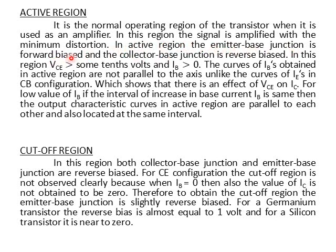In the Active Region, VCE is greater than some tenths of a volt, and IB is greater than 0. The curves of IB obtained in the active region are not parallel to the axis, unlike the curves of IE in the CB configuration — where IE curves were parallel but in CE configuration IB curves are not parallel to the axis. This shows that there is an effect of VCE on IC — as VCE increases, IC also increases slightly.